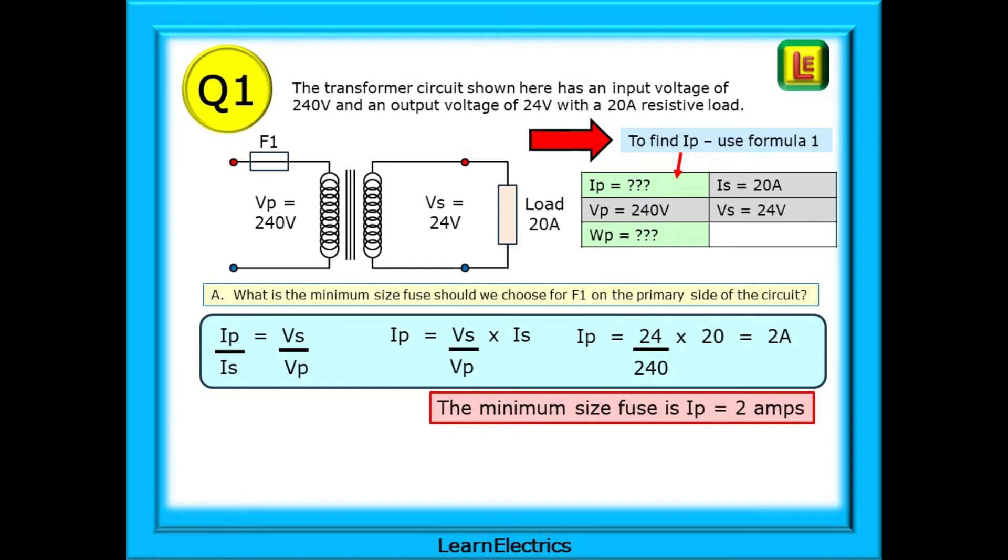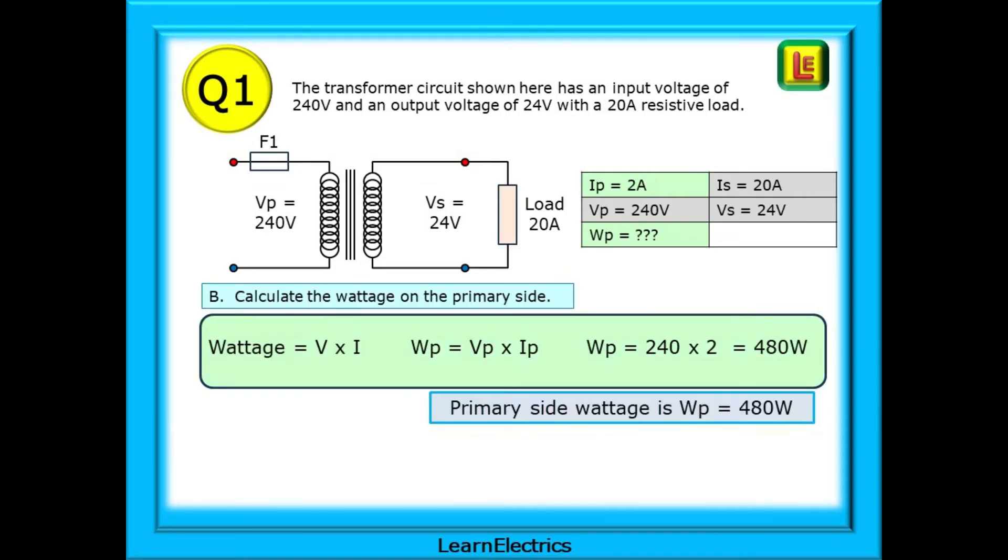The minimum size fuse should be 2 amps. And we've ignored inrush currents in this question and kept the calculations very simple. Now for part B of question 1, the wattage or power on the primary side. We know from formula number 2 that the primary side power will always match the load, the power in the secondary side.